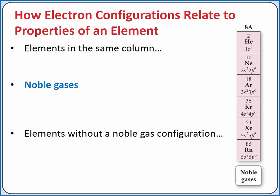For example, group 8A elements are called noble gases. Noble gases are particularly stable because they have filled S and P subshells for their outermost shell.